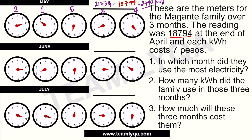Using the same process for June — this time using the May reading as reference — we read the meter: 2, 3, 5, 7, 8. So the June reading is 23,578. Subtracting the May reading of 21,534, their consumption in June was 2,044 kilowatt hours.